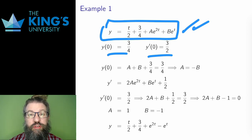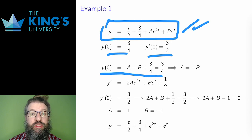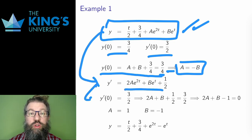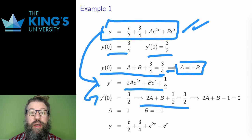The initial conditions give values for y of 0 and y prime of 0. Well, if I put 0 into the solution, I get this expression, and this must be equal to 3 quarters, according to the initial condition, which leads to the equation a equals negative b. Then if I calculate the derivative and evaluate at 0, I get this equation, which leads to the equation 2a plus b minus 1 equals 0.